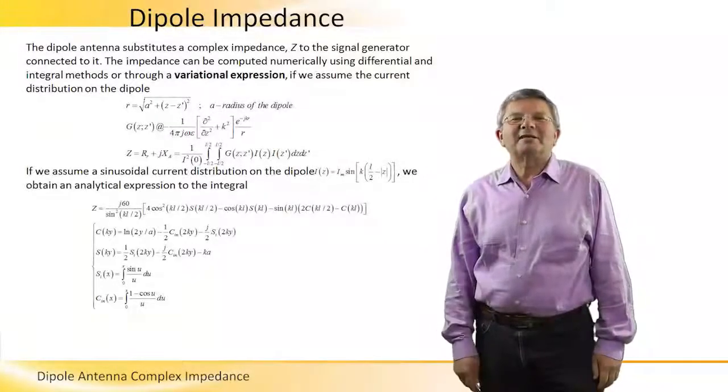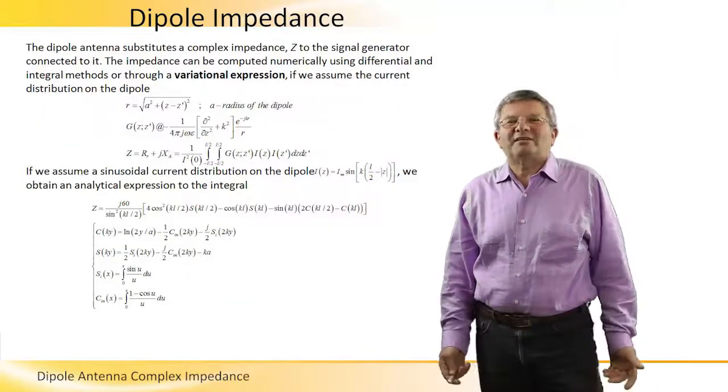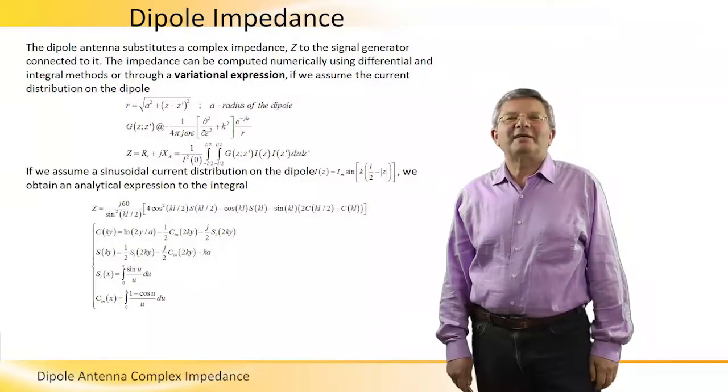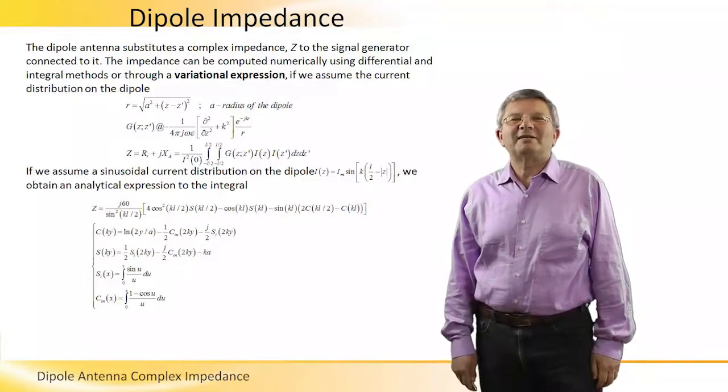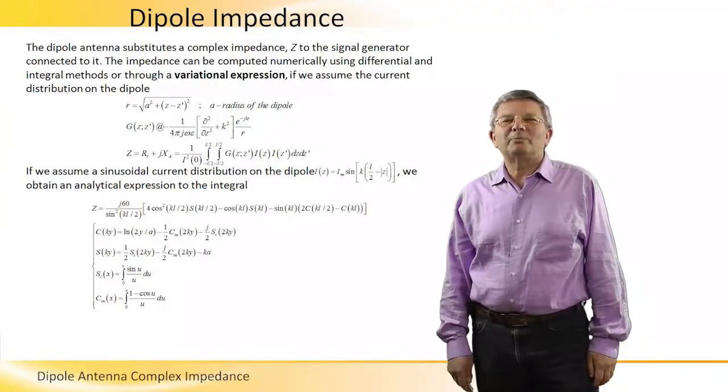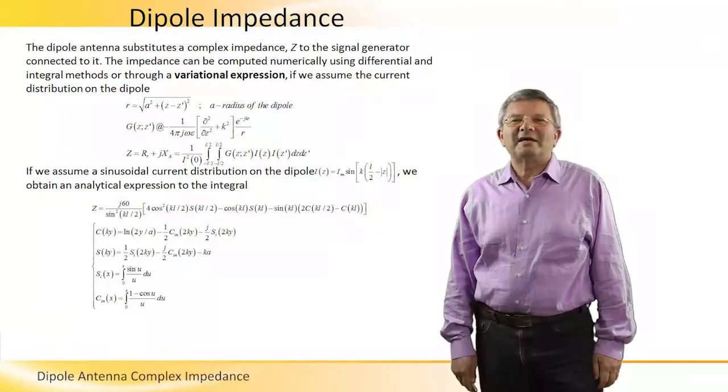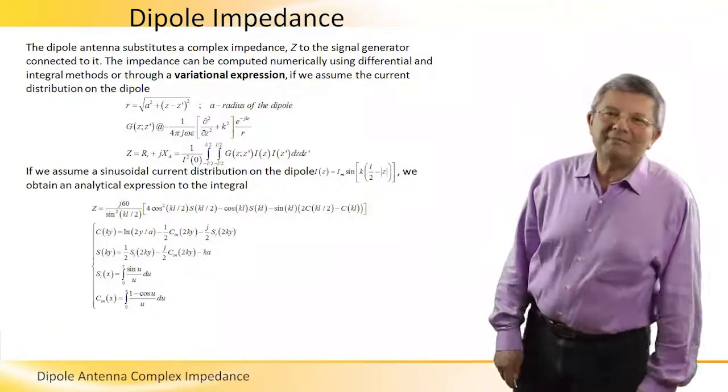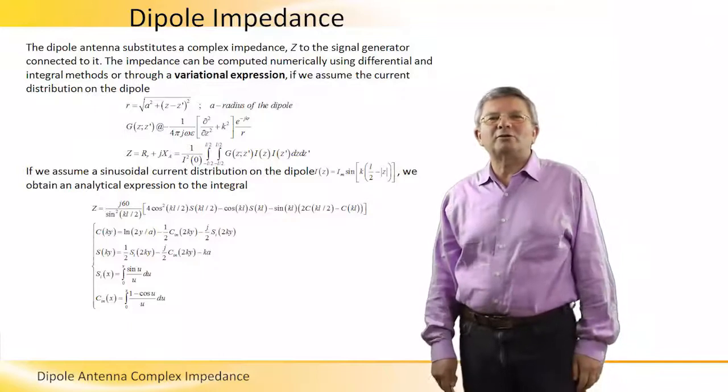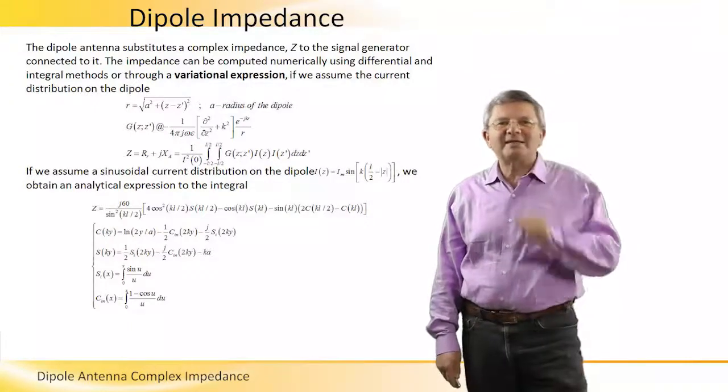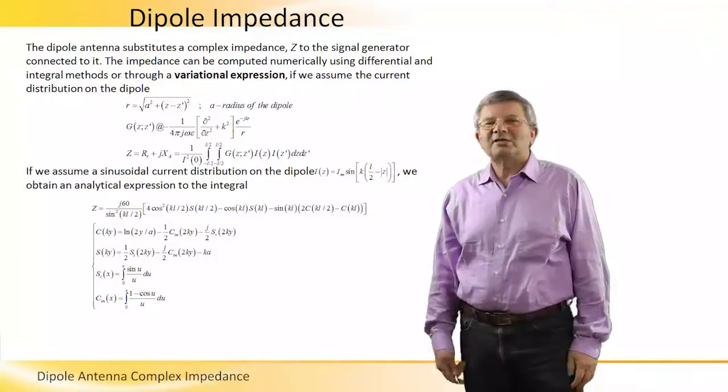Another important parameter, characteristic of any antenna, and especially the dipole antenna, is the complex impedance, Z, which is the impedance that the signal generator feels when the antenna is connected to it.